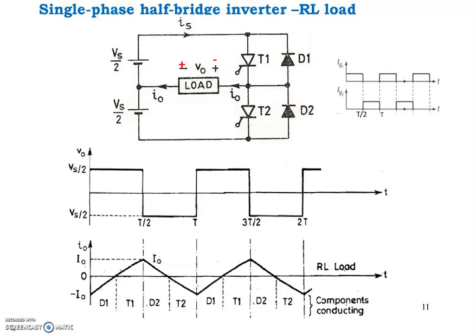When the diode conducts, the energy is fed back to the DC source. So these diodes are called feedback diodes. In a single-phase half-bridge inverter with RL load, the output current I₀ will not be in phase with the output voltage V₀. The diodes connected in antiparallel with the thyristors allow current to flow when the main thyristor is in the off state. As the energy stored in the inductor is fed back to the DC source when these diodes are conducting, they are known as feedback diodes.